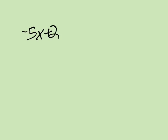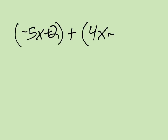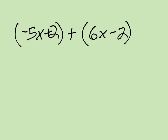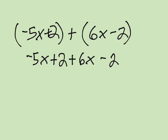Let's look at just one more — I'm going to throw in a little bit of a trick. How about negative 5x plus 2 plus 6x minus 2. Two tricks for you. You don't need to rewrite this every single time, but if it helps you, by all means go ahead and do it. We've got our four terms here, and you don't have to box them every time, but again, if it helps you, by all means do it.